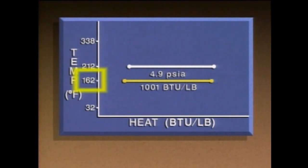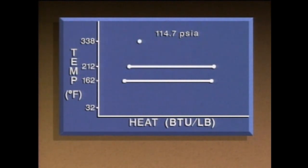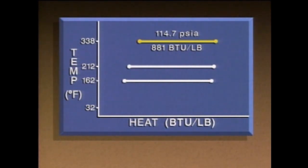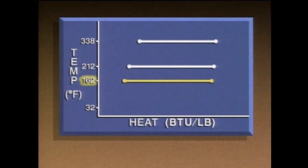At lower temperatures, the water molecules move more slowly. As a result, it's harder for them to boil and escape the body of water as steam, so it takes more heat to change the water completely to steam. At a pressure of 114.7 PSIA, water won't boil until it reaches 338 degrees. Under these conditions, the latent heat of vaporization is about 881 BTUs per pound, which is less than the latent heat of vaporization at atmospheric pressure. At higher temperatures, the water molecules move more quickly, so it's easier for the molecules to boil and escape as steam — it takes less heat to change the water completely to steam. As the pressure and boiling temperature of water increase, the latent heat of vaporization decreases.